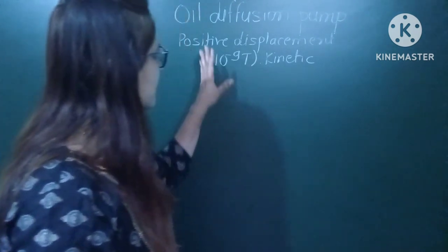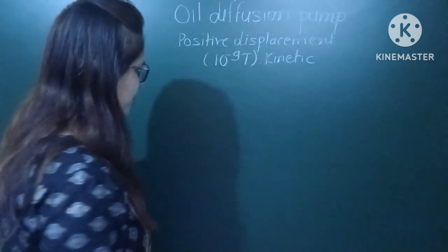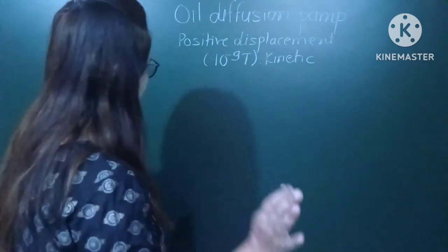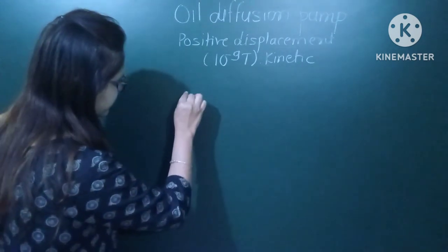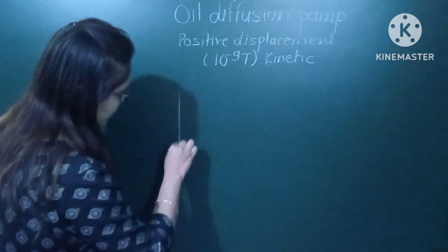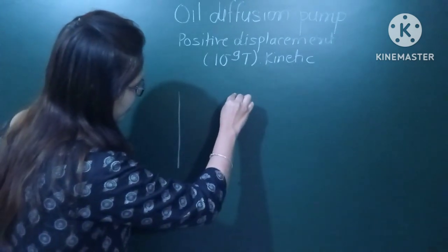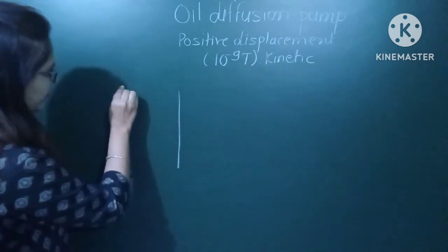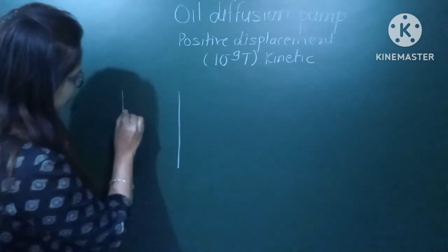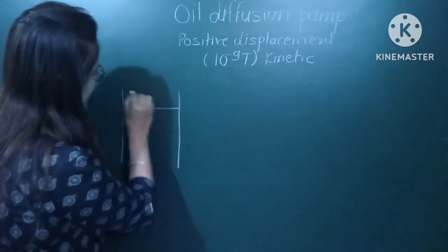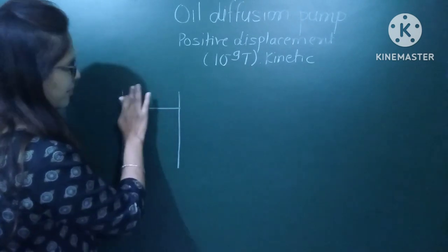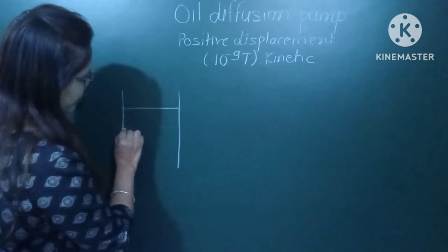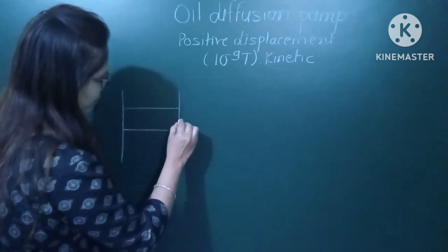Let me draw first the construction of the oil diffusion pump. This is how the basic building block of the oil diffusion pump looks. This is the sample chamber where we want to generate the vacuum, and this is the roughing valve.